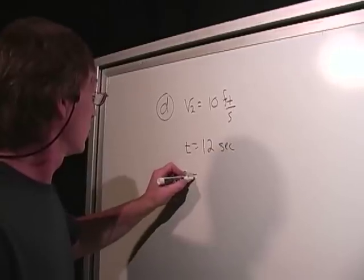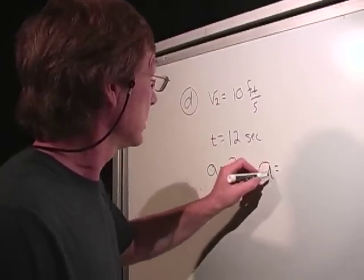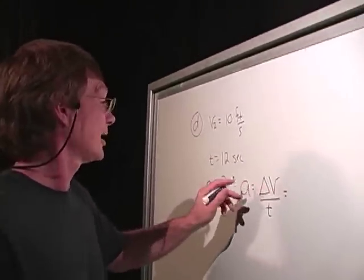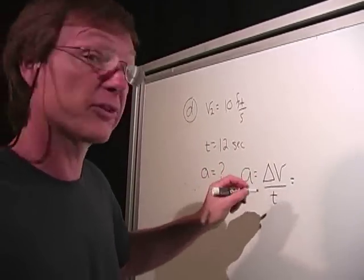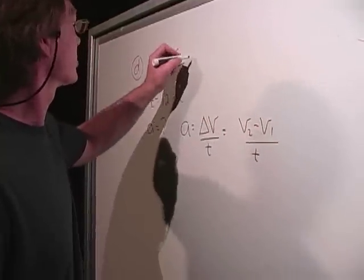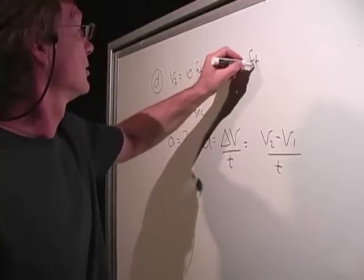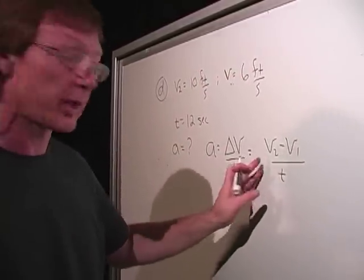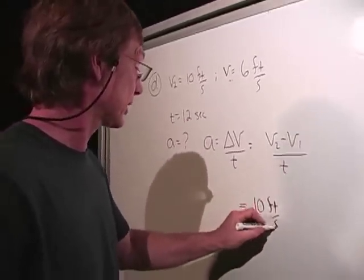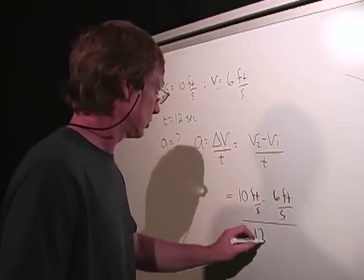Well, acceleration is the change in velocity, use that delta to mean change in, divided by time. Now I can put it right in here. I can say that's equal to V2 minus V1 over T. The original velocity, V1, that's 6 feet per second. So now I've just got to plug in what I got. Accelerated, it's going to be positive. It's going to be 10 feet per second minus 6 feet per second divided by 12 seconds.